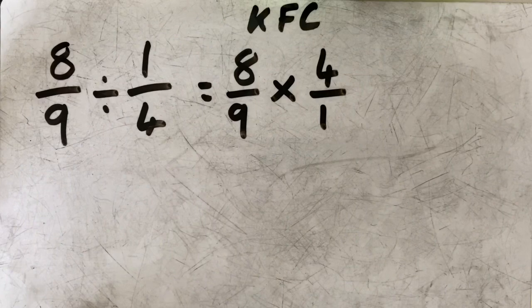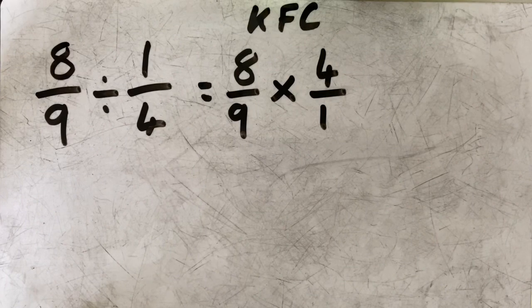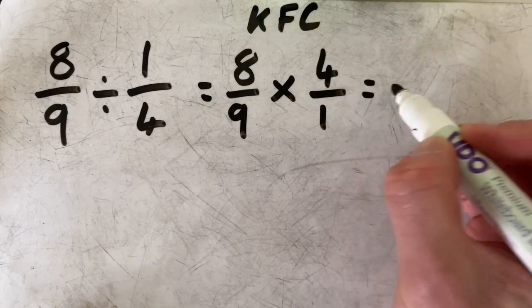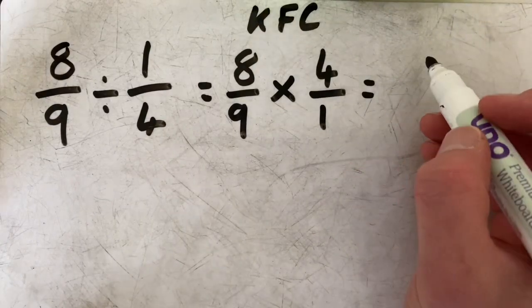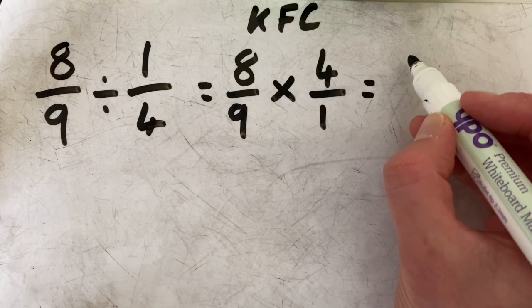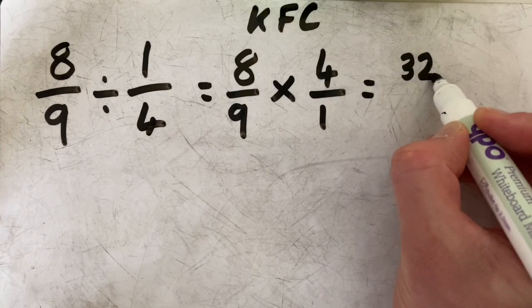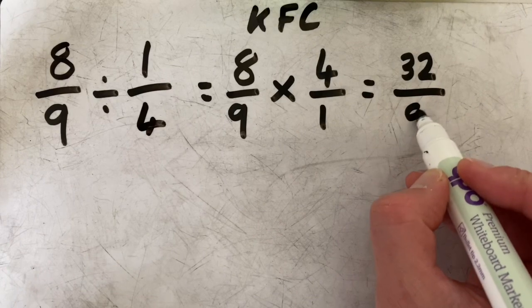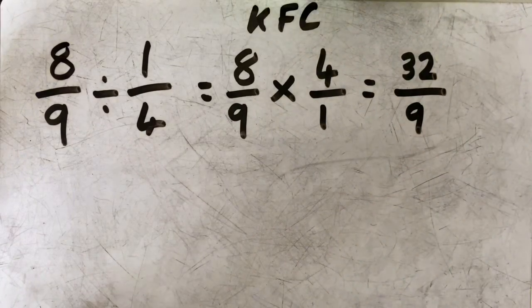Eight-ninths divided by a quarter is exactly the same as eight-ninths times by four. So then, multiplying fractions is dead easy. You multiply the top by the top, and you multiply the bottom by the bottom, the denominators. Thirty-two ninths.